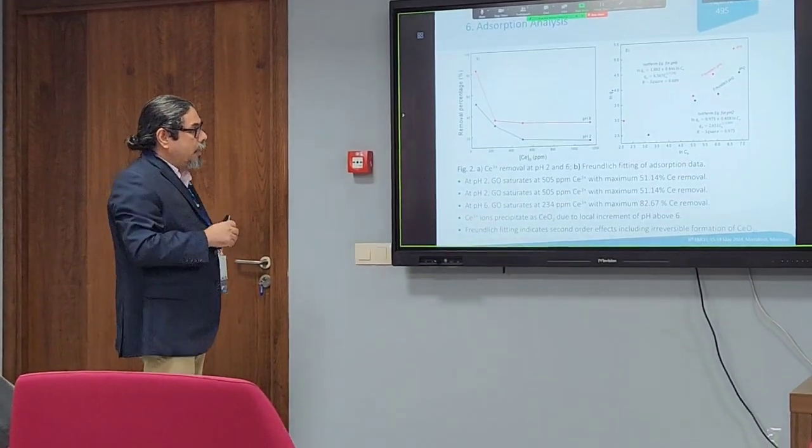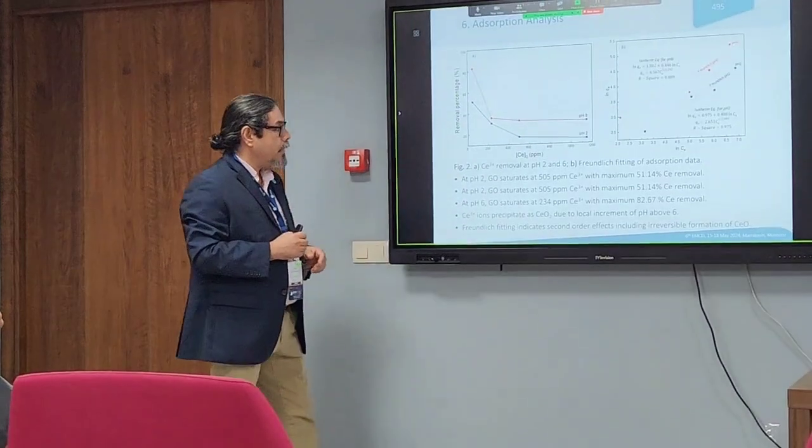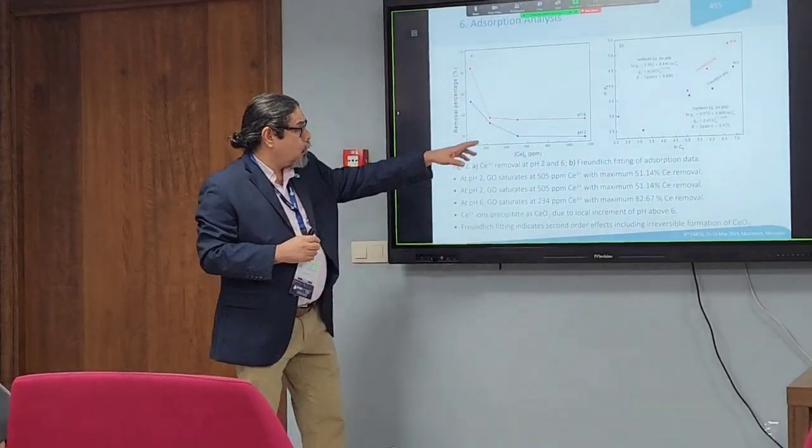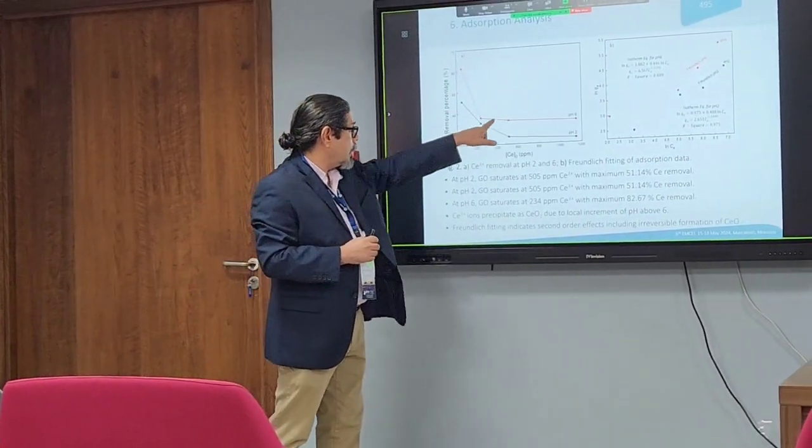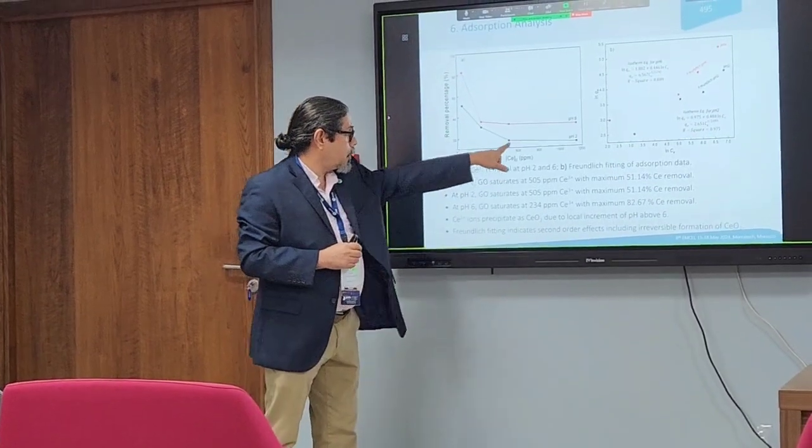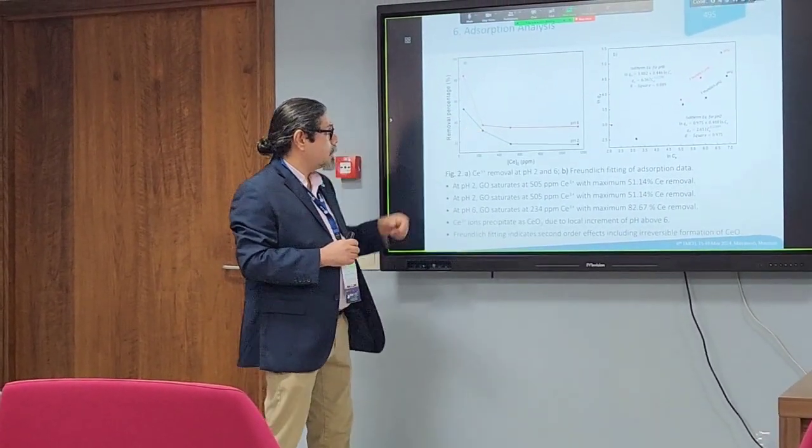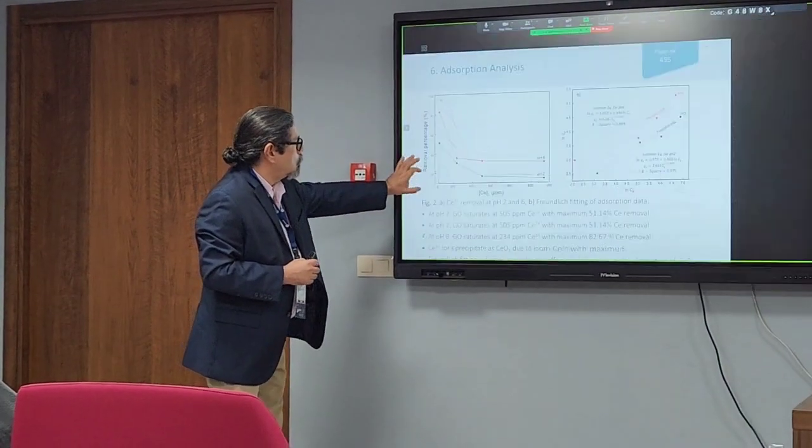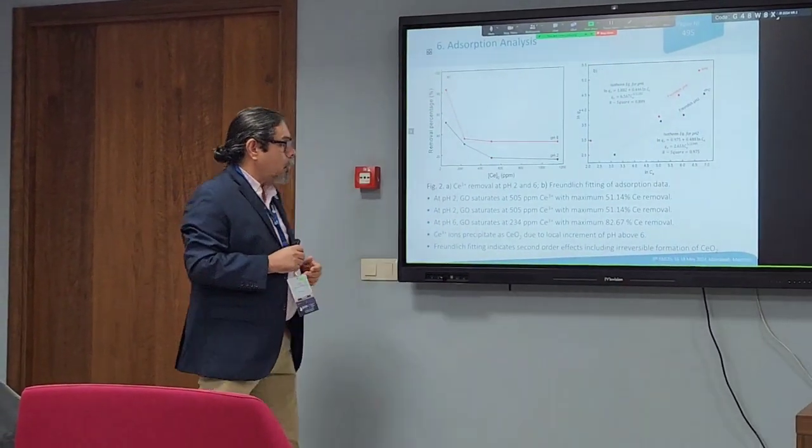This is absorption analysis at different concentrations of cerium-3 in the solution, and this is the removal percentage. We can see that depending on the pH, we reach saturation at different concentrations, for example here in the case of pH 2 and in the case of pH 6, we have different saturation conditions.